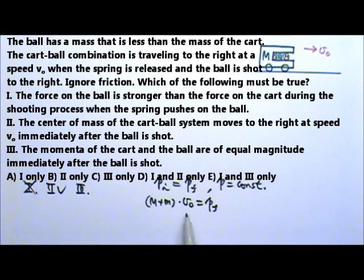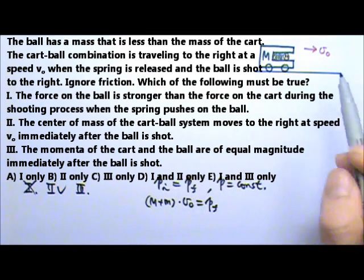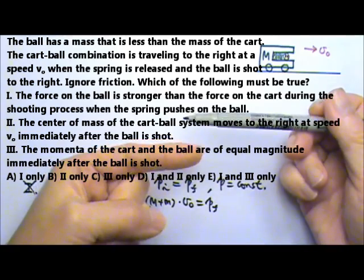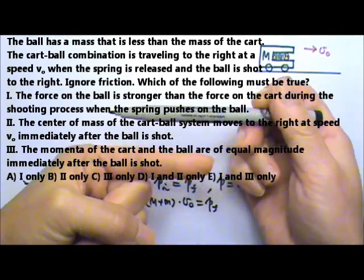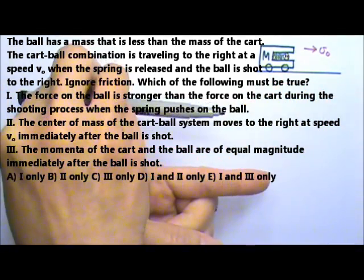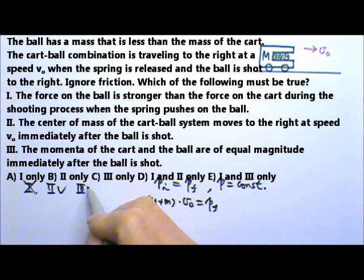So we only know that the final momentum of the two carts added together has to be this much. It does not guarantee these two carts to have the same amount of momentum with its opposite direction or same direction. So number three is not correct. So the answer is B, two only.